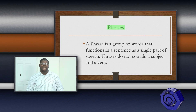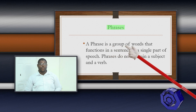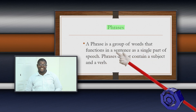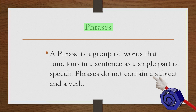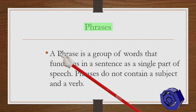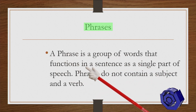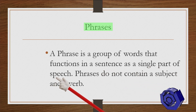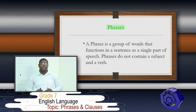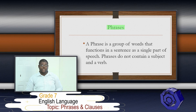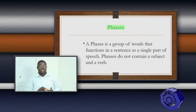So, phrases. What is a phrase? A phrase is a group of words that functions in a sentence as a single part of speech. Phrases do not contain a subject and a verb. What I want you to remember at this point is that a phrase does not contain a subject and a verb. It's a group of words and they do not have a subject and a verb.